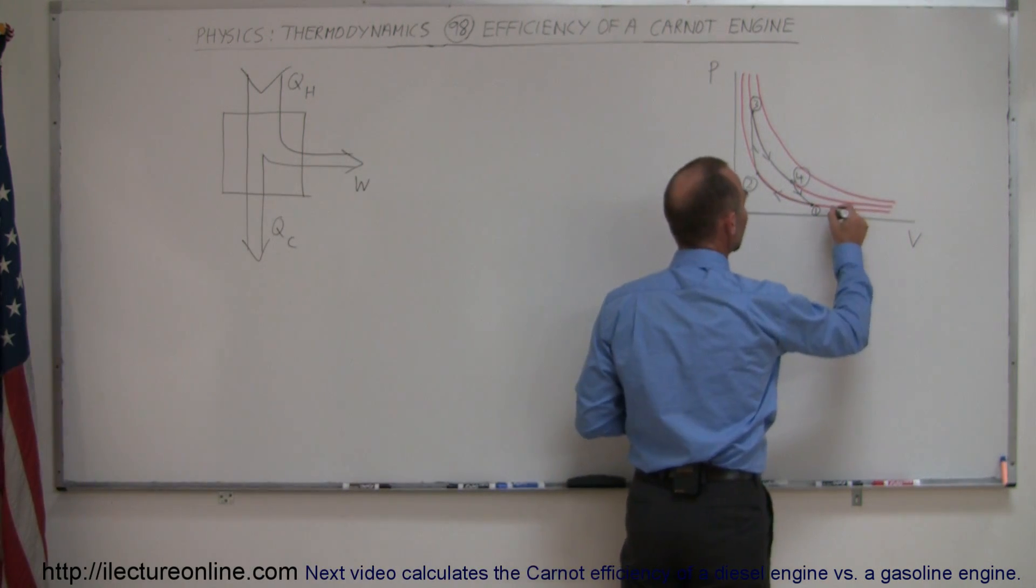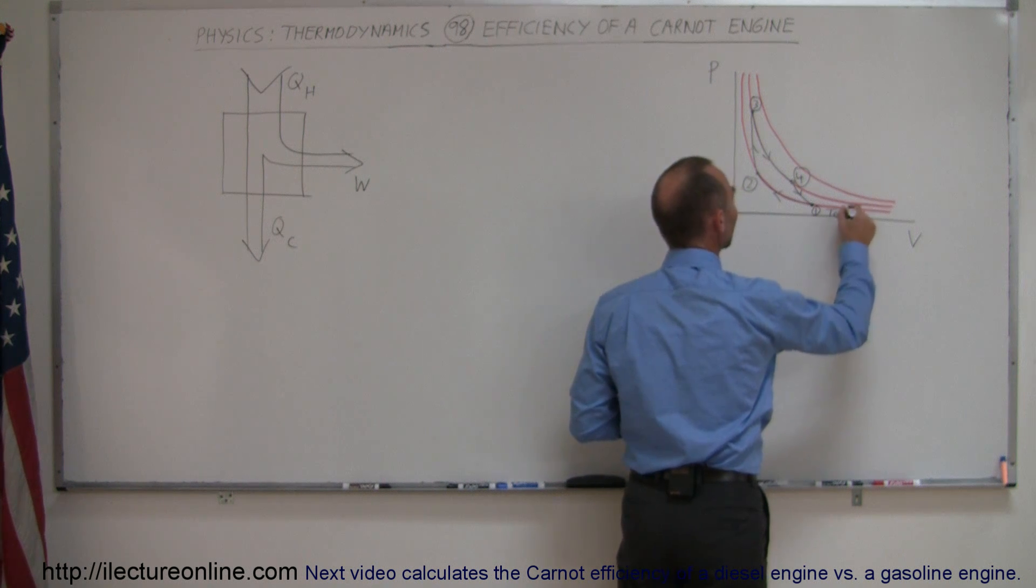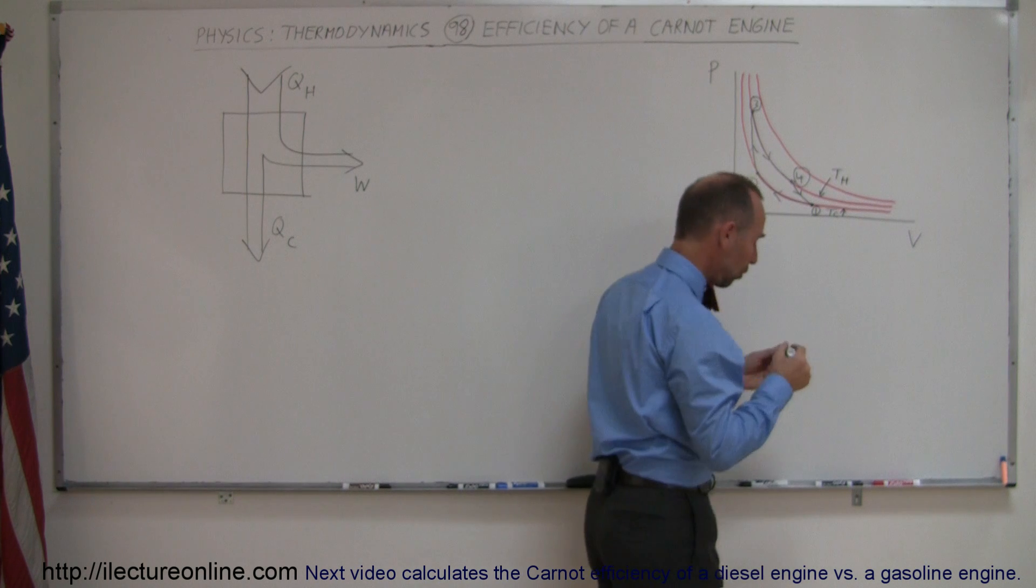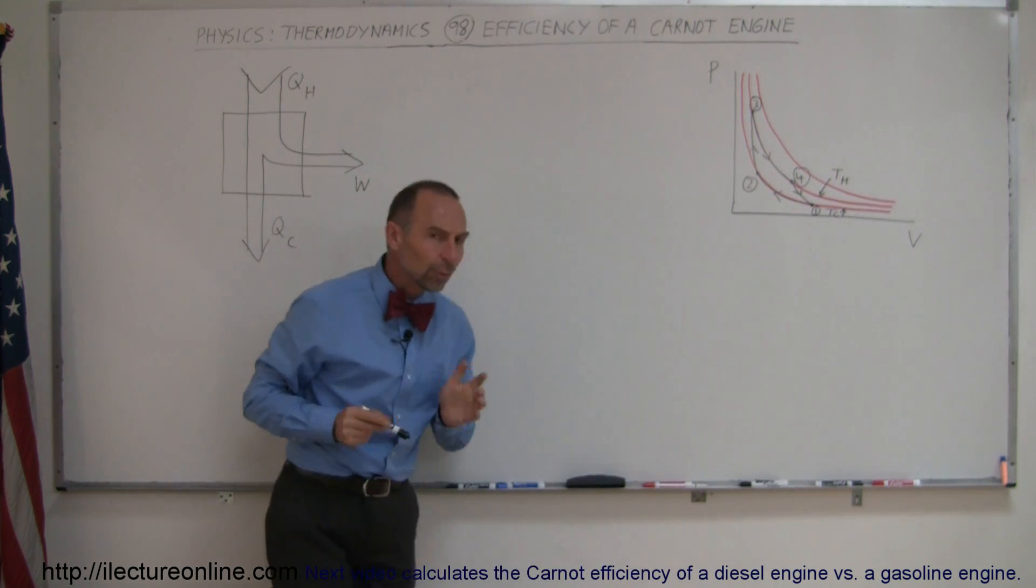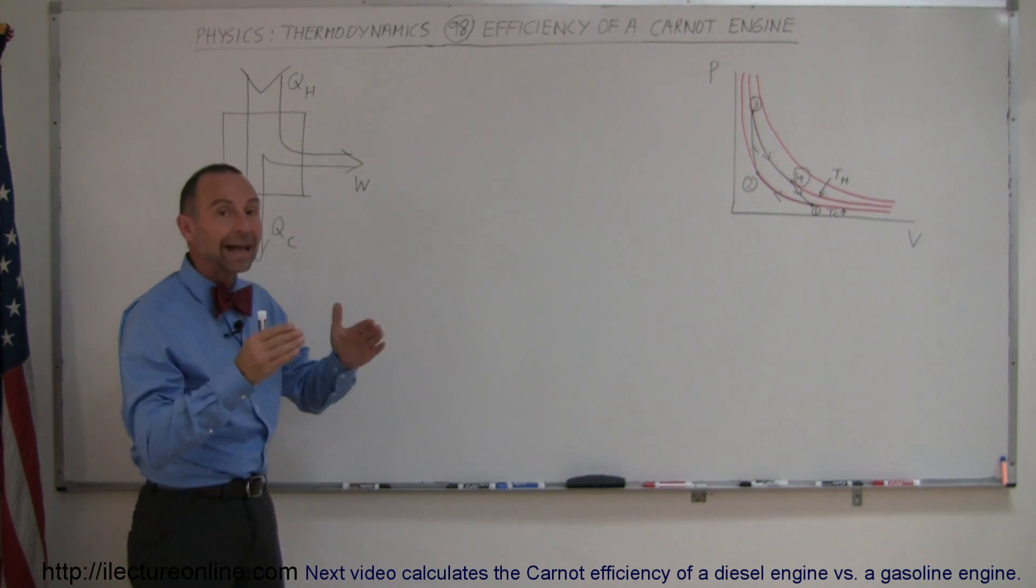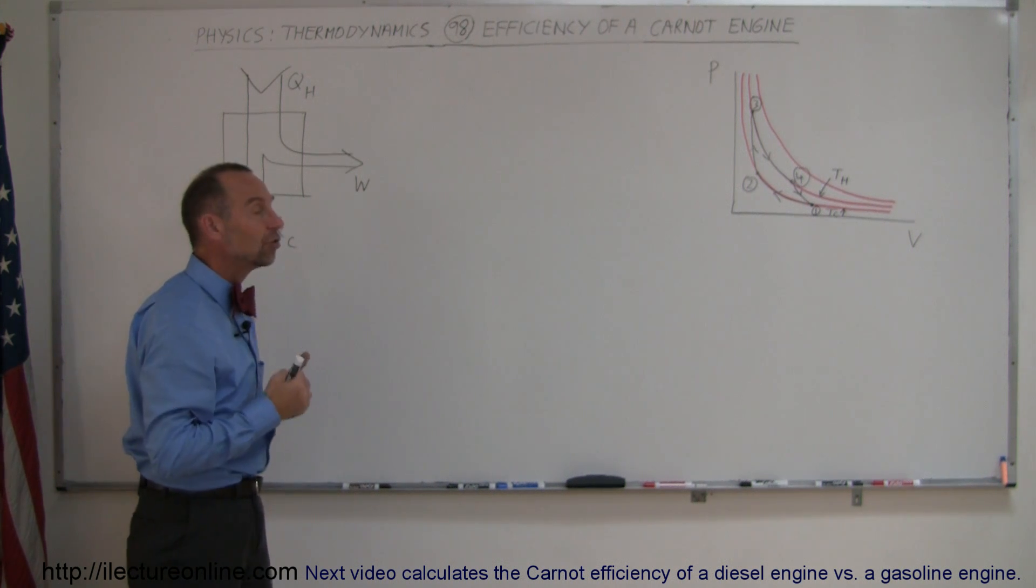Now notice that this here would be T-cold for this isotherm and this here would be T-hot. Carnot realized that the efficiency of an engine was determined, or at least bounded, by the temperatures at which this engine operated.